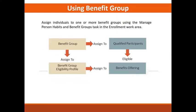To use a benefit group, you would assign individuals to one or more benefit groups using what's called the Manage Person Benefits, which is found in the enrollment work area. First, create the benefit group, then attach it to the people you want to group together. Then use that benefit group in an eligibility profile, linking it to qualified participants to help control benefits offerings.